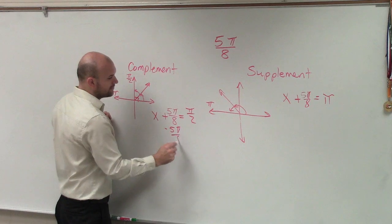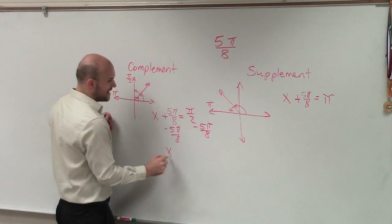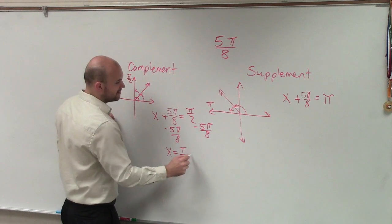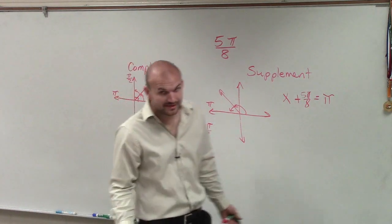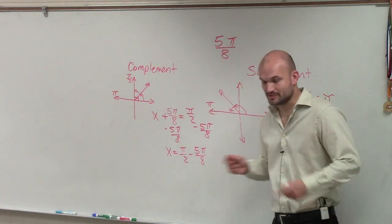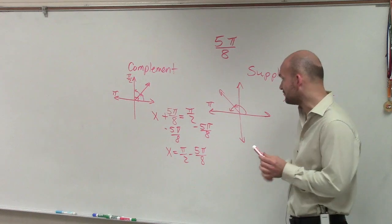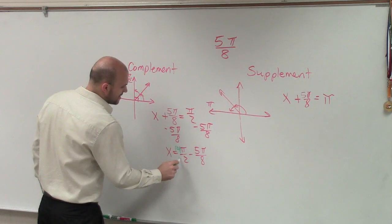So you subtract 5π/8. So then x equals π/2 minus 5π/8. Now, the problem comes in, though, is because we don't have the same denominators, right? So therefore, you've got to multiply by 4/4 to get like denominators.